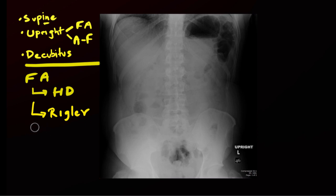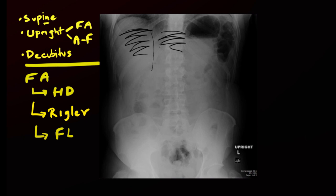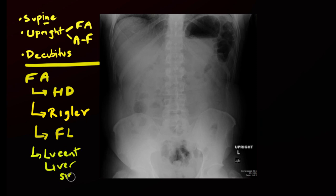Another sign of a large amount of free air is the football sign, also known as the falciform ligament sign. Particularly seen on supine radiographs, as air rises to the most non-dependent portion of the abdominal cavity, you see a large lucency that outlines the falciform ligament, which appears as a white line dissecting two areas of large lucency. Finally, a subtle sign of free air on supine radiographs is the lucent liver sign — instead of increasing density from the abdominal wall toward the midline, you see increased lucency across that area, suggesting free intraperitoneal air.